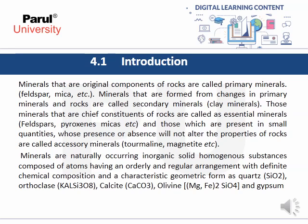Minerals that are original components of rock are called primary minerals — for example, feldspar, mica, etc. Minerals that are formed from changes in primary minerals and rocks are called secondary minerals — for example, clay minerals. Those minerals that are chief constituents of rocks are called essential minerals — for example, alpha, pyroxene, mica, etc. Those which are present in small quantities whose presence or absence will not alter the properties of the rocks are called accessory minerals — for example, tourmaline, magnetite, etc.